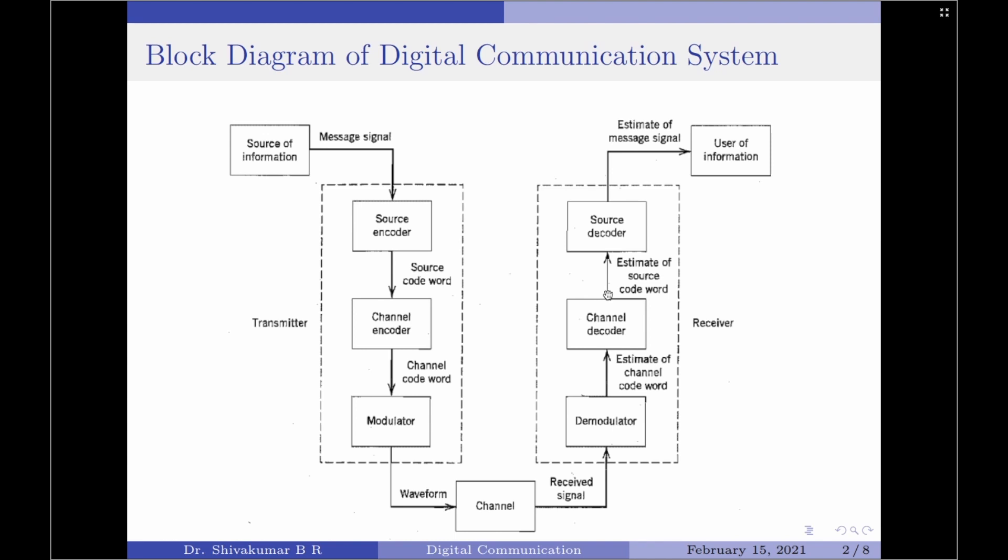These extra bits do not convey any information but help the receiver to detect and or correct some of the errors in the information bearing bits. There are basically two methods of channel coding. The first one is called block coding in which the encoder takes a block of k information bits from the source encoder and adds r error control bits, where r is dependent on k as well as the error controlling capabilities desired.